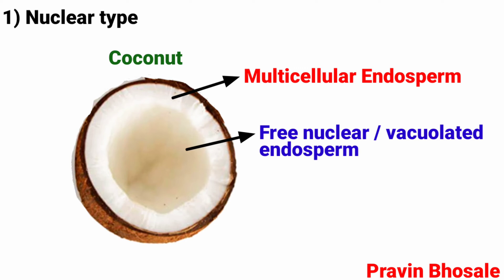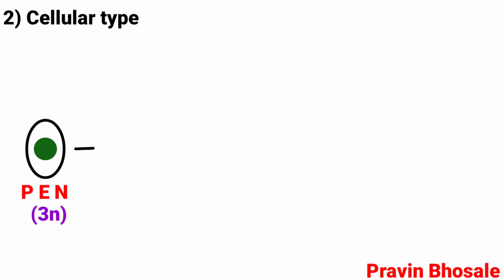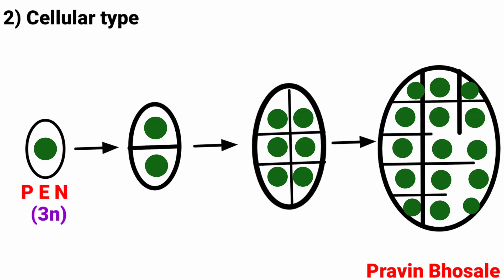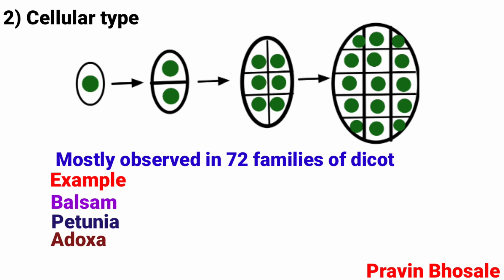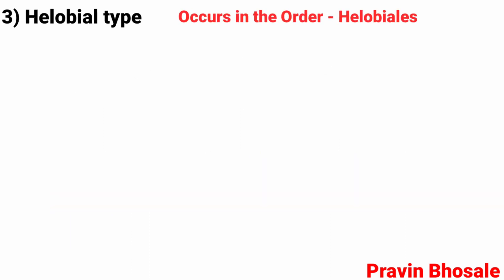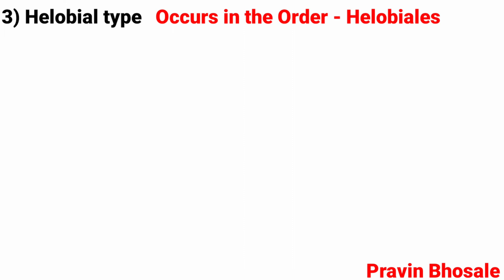Cellular type: in some plants, division of the primary endosperm nucleus is immediately followed by wall formation, so that the endosperm is cellular right from the beginning. It is mostly observed in 72 families of dicots. Examples include balsam, petunia, and adoxa.